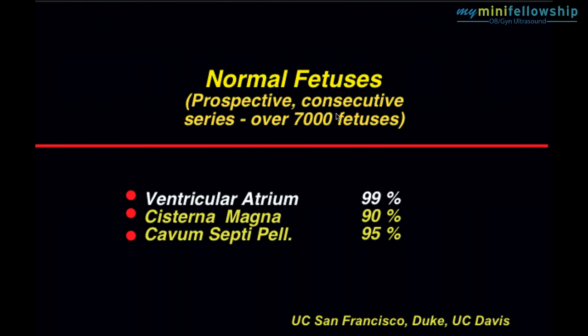And now in large prospective consecutive series totaling over 7,000 fetuses, the ventricular atrium was visible in 99% of the cases. So, if you're having a problem seeing the ventricular atrium, you're having a real problem and you're not going to solve that problem by saying, oh, I'll look at the temporal horn instead.